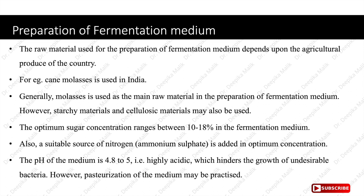The optimum sugar concentration ranges between 10 to 18 percent in the fermentation medium. A suitable source of nitrogen — ammonium sulfate — is added in optimum concentration. The pH of the medium is 4.8 to 5, which is highly acidic and hinders the growth of undesirable bacteria. Pasteurization of the medium may also be practiced.